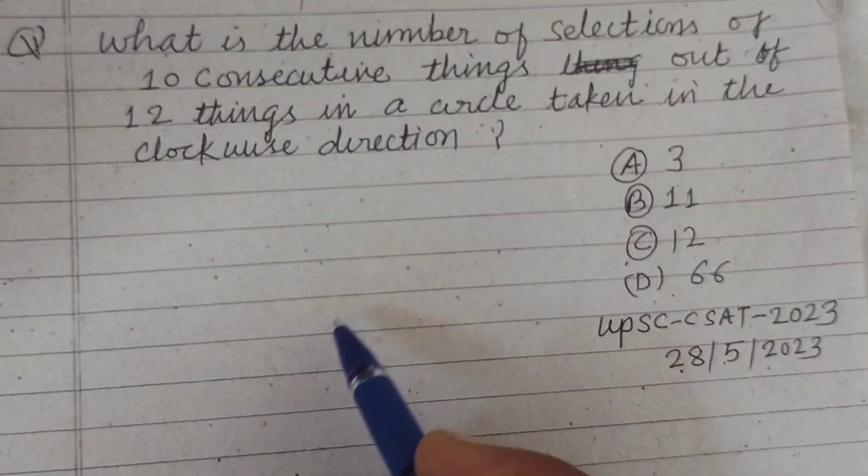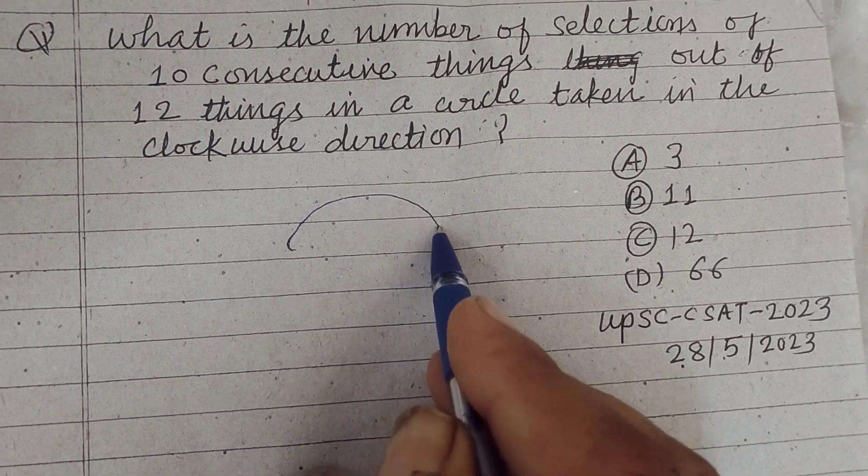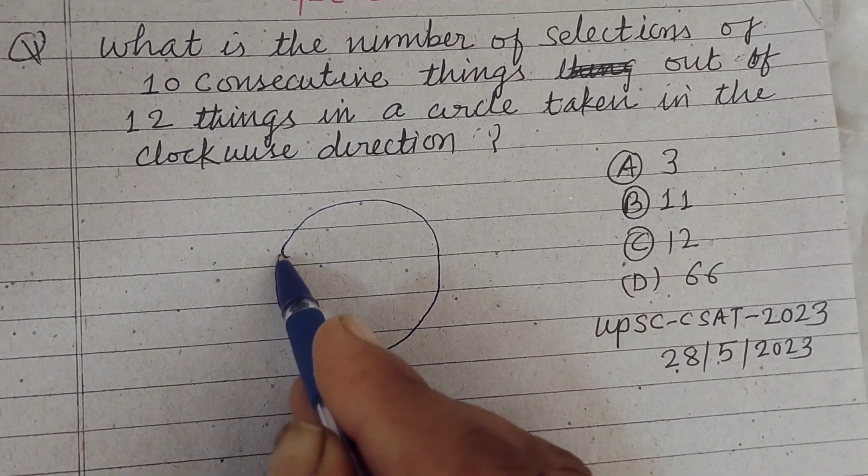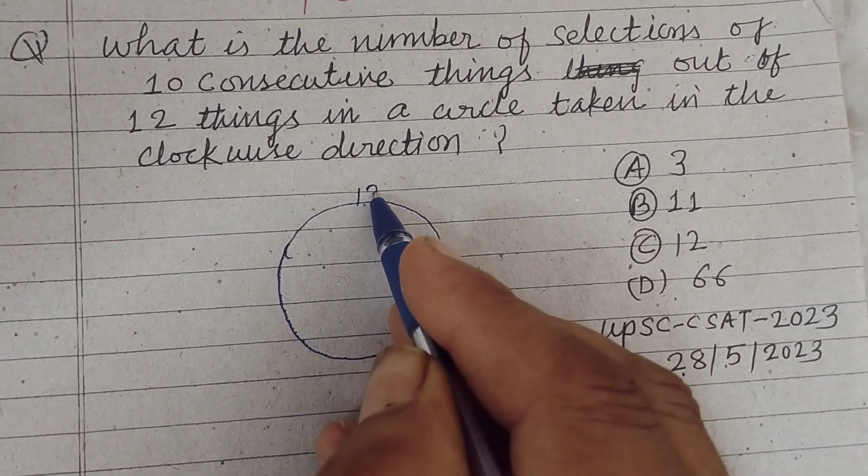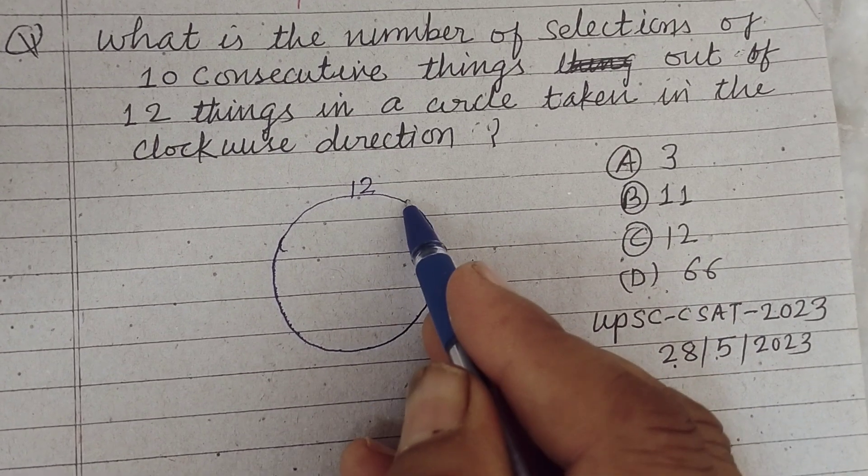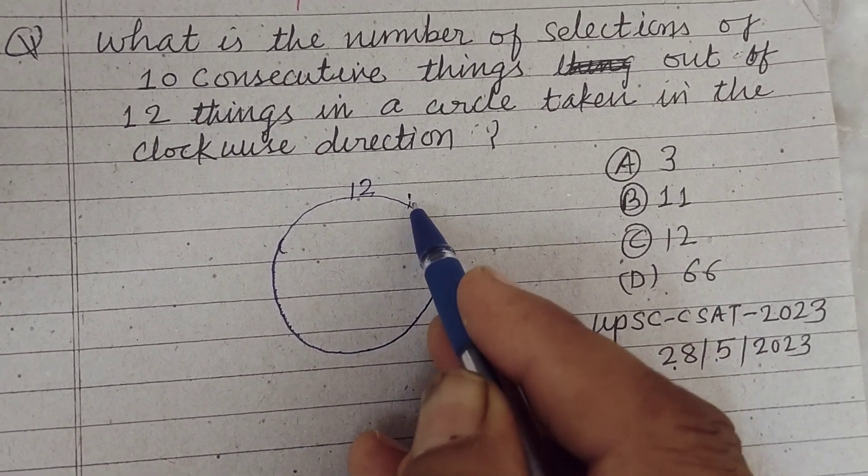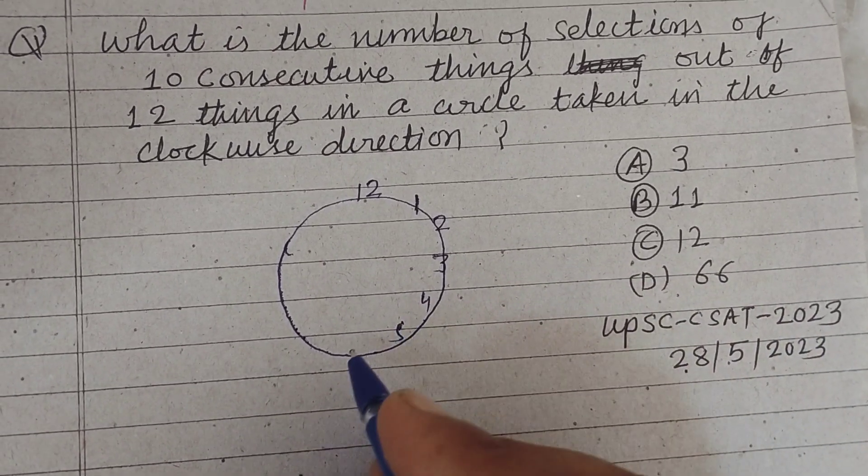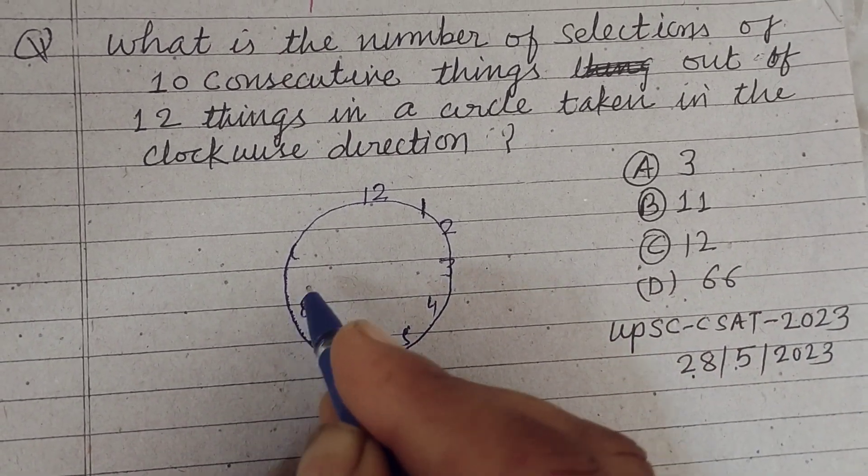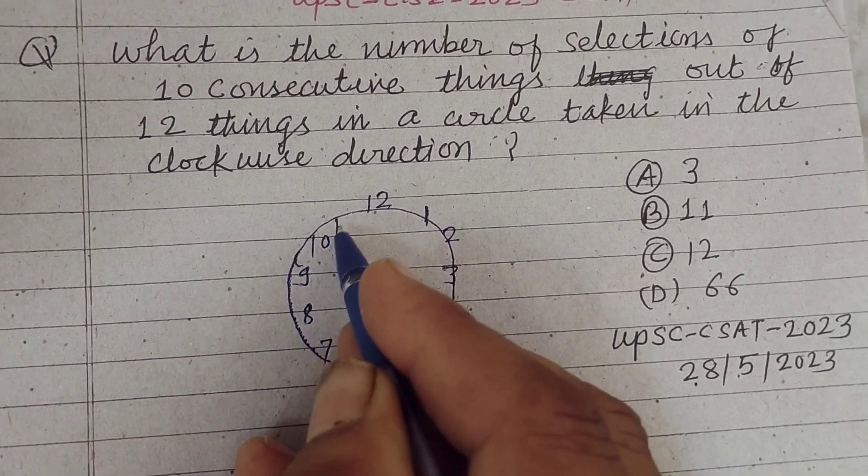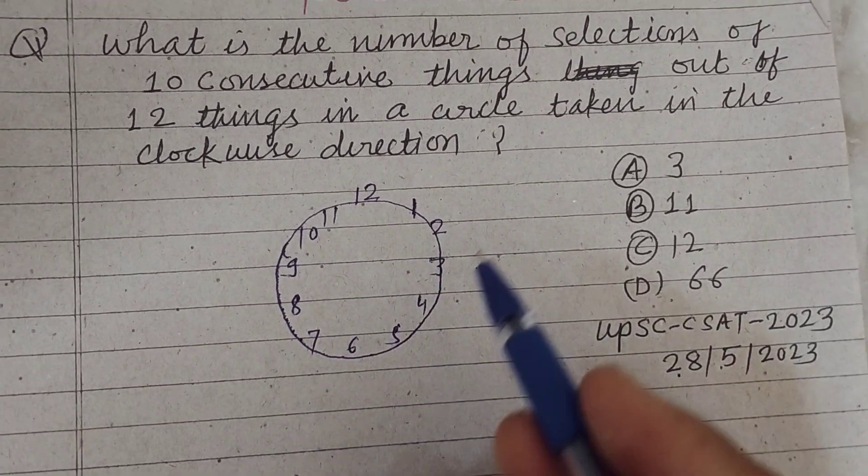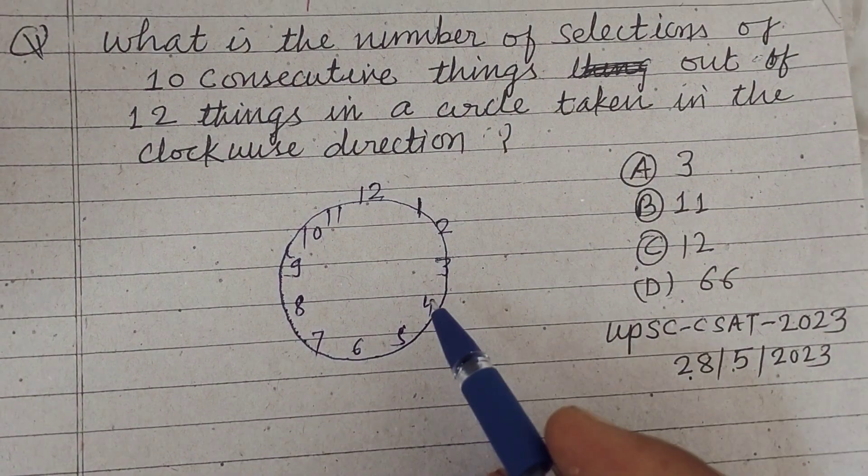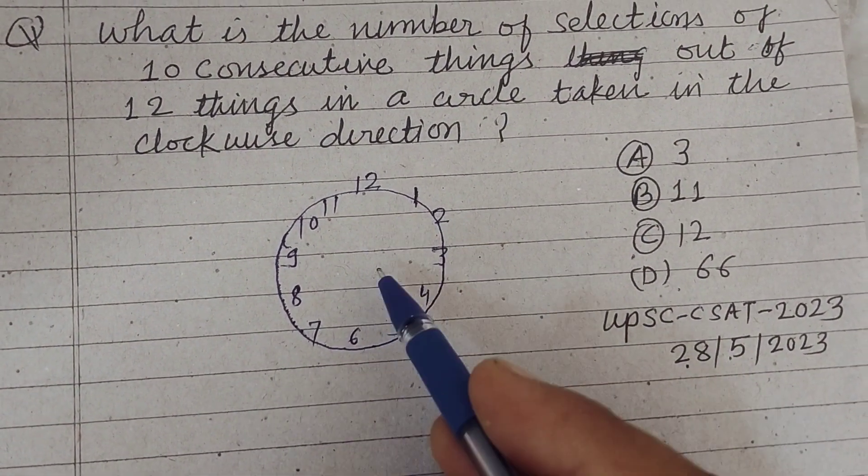So students, here we have 12 things like in a clock: 12, 1, 2, 3, 4, 5, 6, 7, 8, 9, 10, 11. Now we want to select 10 things out of these 12 things.